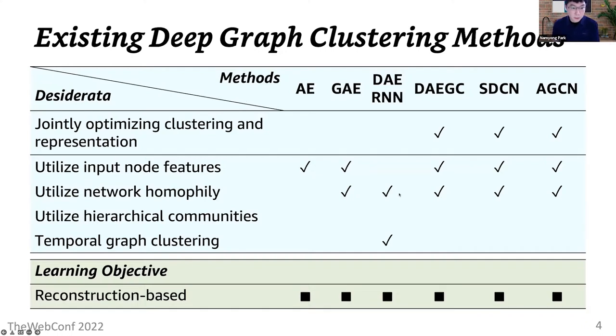This table compares major earlier methods where rows correspond to desirable properties for deep graph clustering. In these DGC methods, a major challenge lies in how to effectively utilize available signals from the input data. Existing methods, however, do not satisfy all of these desirable properties at the same time.